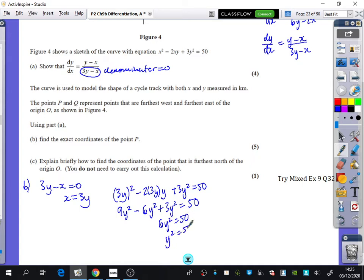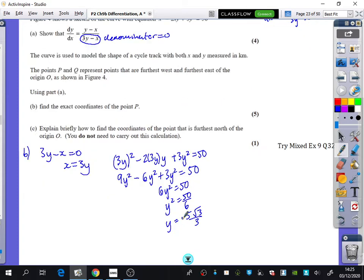So y squared is 50 over 6. In other words, y is equal to, when you do 50 over 6 square root it, you get 5 root 3 over 3. But it's plus or minus. And it's good that there's plus or minus, because we need it to be referring to the two different points, which means that x is equal to 3y. So x is equal to 3 times this, which is going to be plus or minus 5 root 3, where the plus ones correspond to the plus ones, and the minus ones correspond to the minus ones.